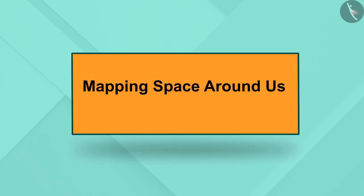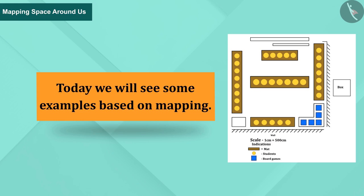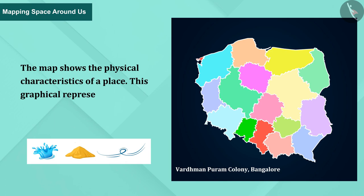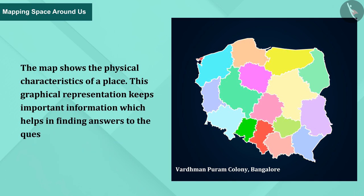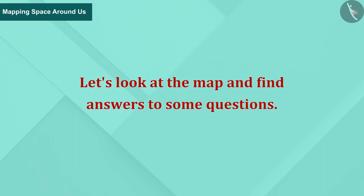Welcome to this video. In the previous video, we learned about mapping the places around us. Today we will see some examples based on mapping. A map shows the physical characteristics of a place. This graphical representation keeps important information, which helps in finding answers to questions. In the previous video, we learned to make and understand a map clearly.